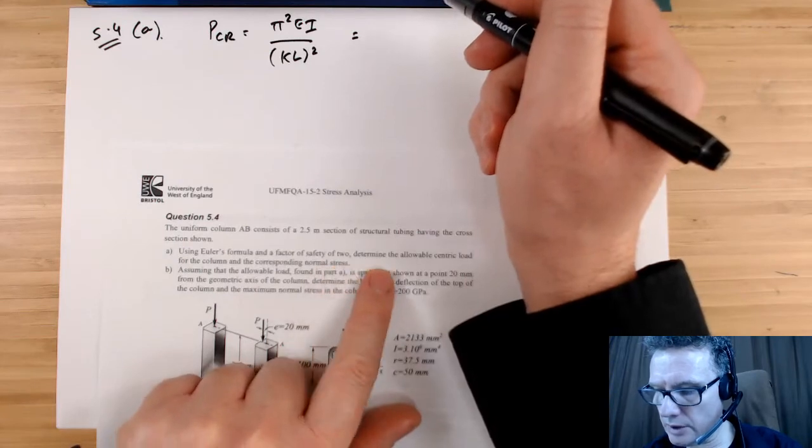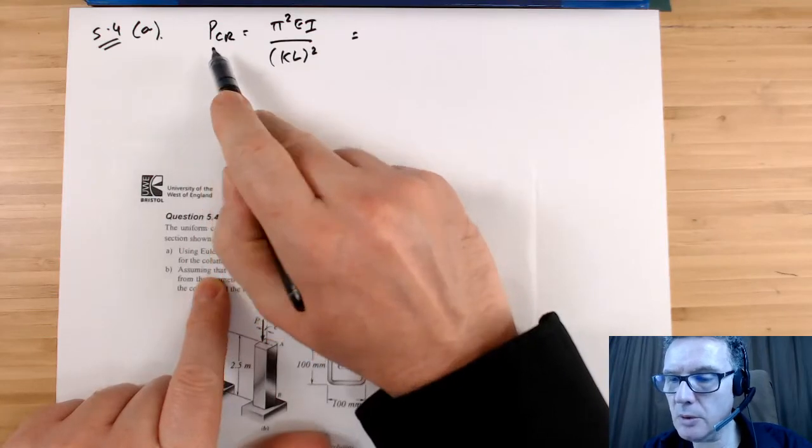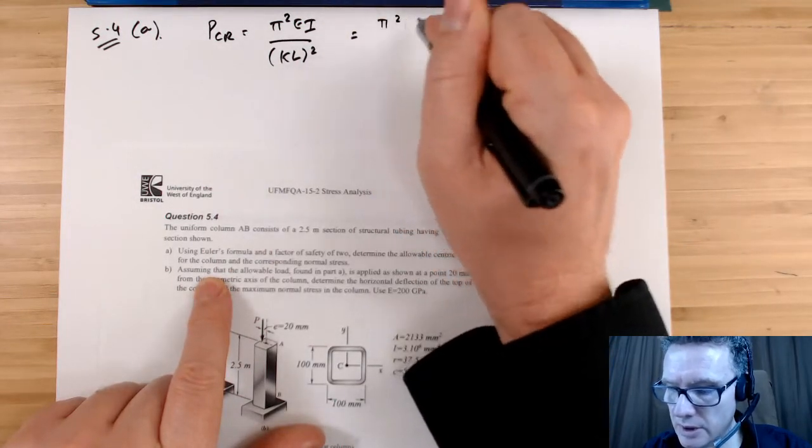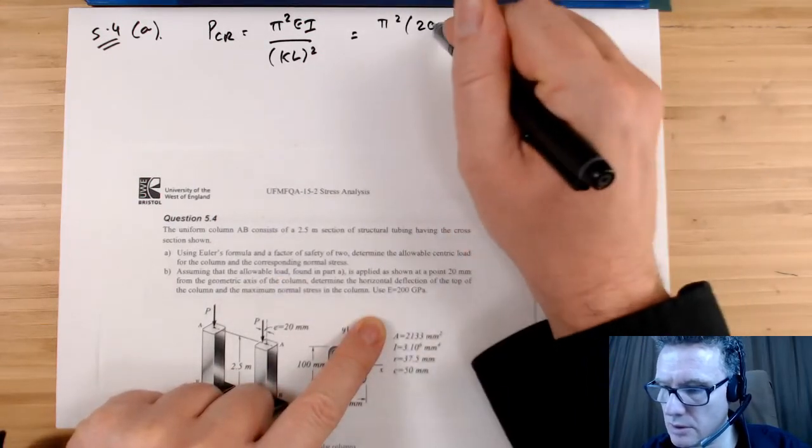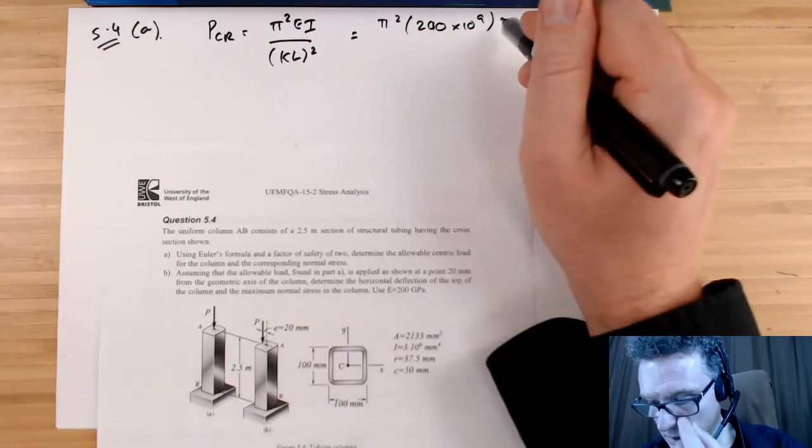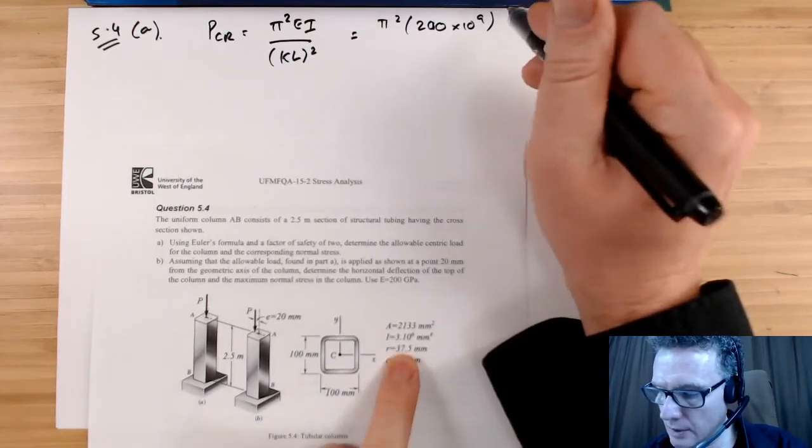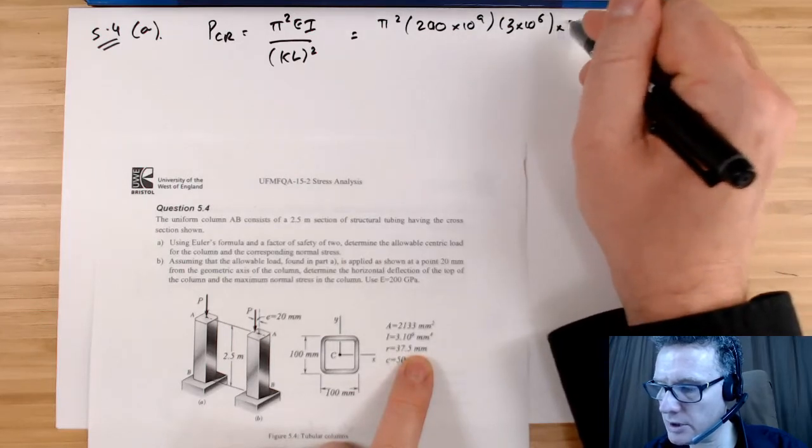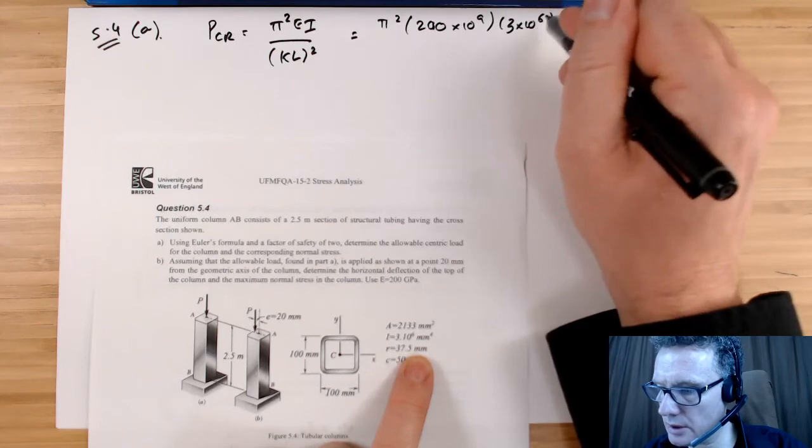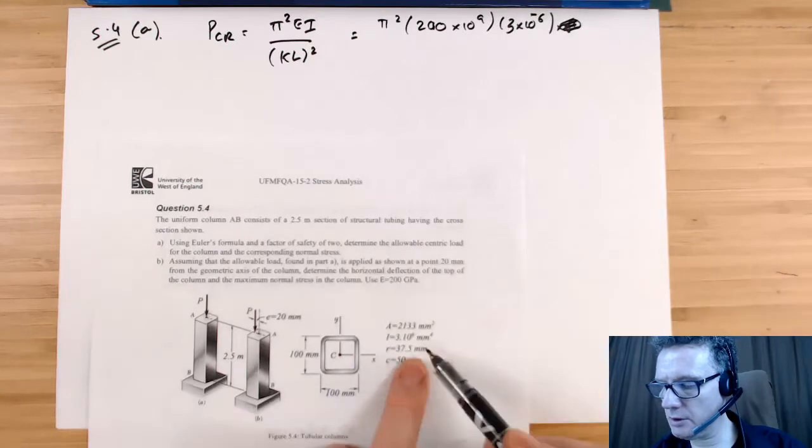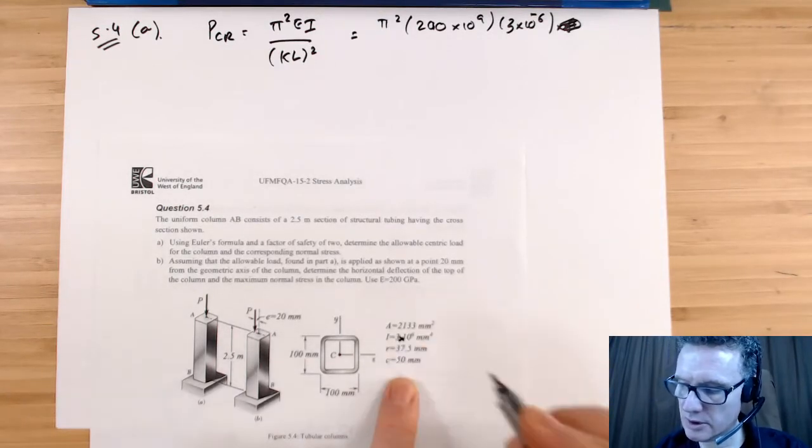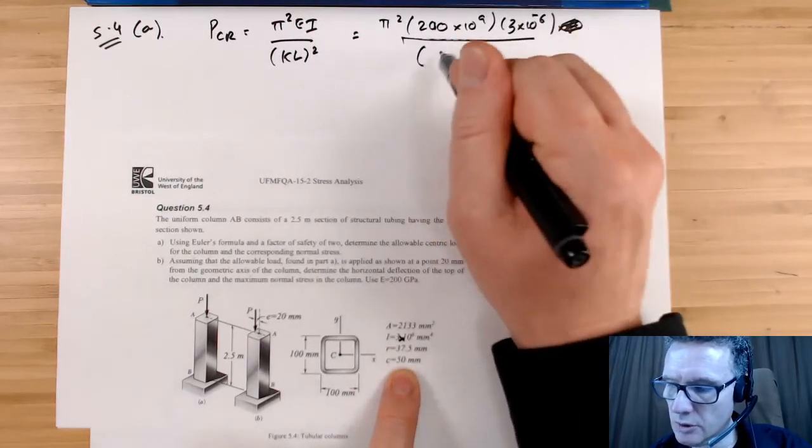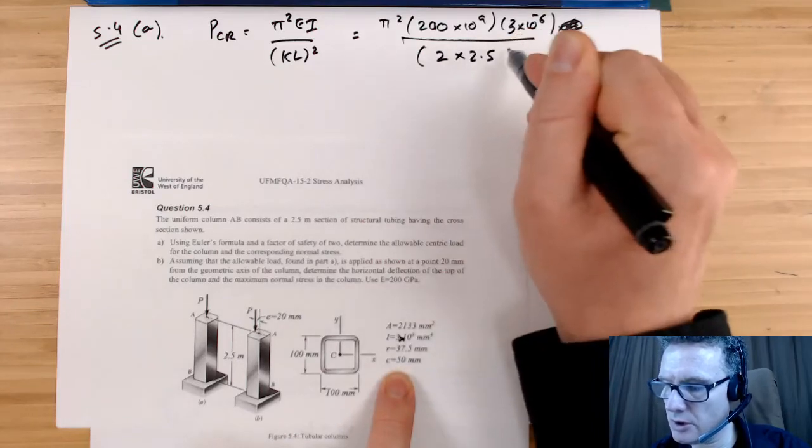So we're going to assume that k equals 2. We use that formula there, so P critical loading will be pi squared E I over k L squared. Let's determine the critical buckling load first because I'm actually going to use that later on. So that's going to be pi squared, E is 200 GPa, I is 3 times 10 to the 6 millimeters to the fourth, so that'd be times 10 to the minus 6 in meters. My k I'm taking as 2, my length I'm taking as 2.5 squared.